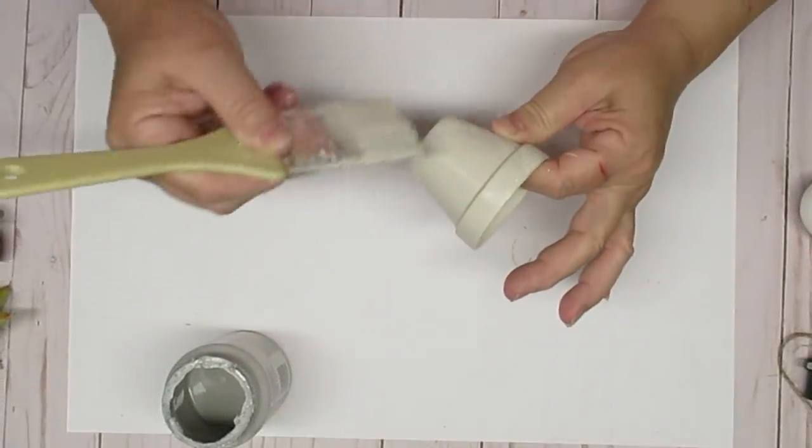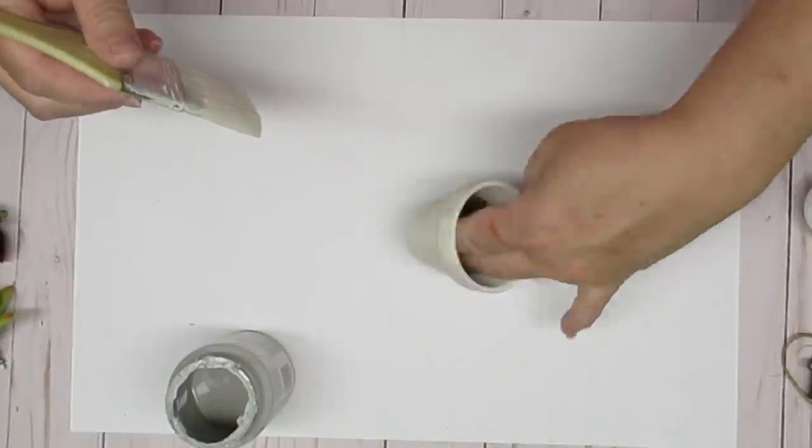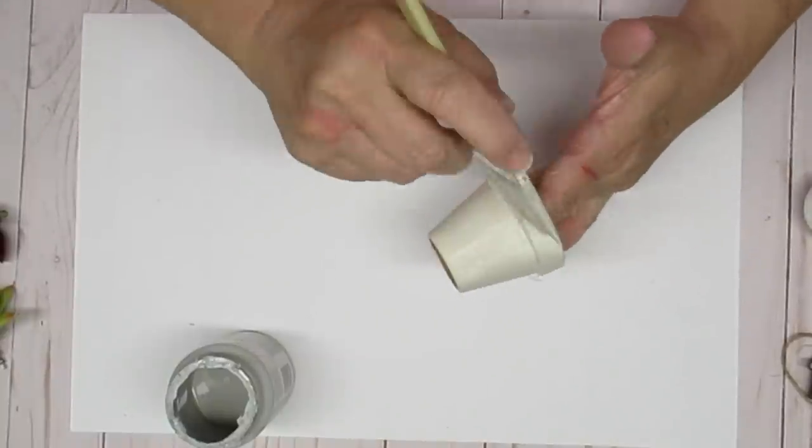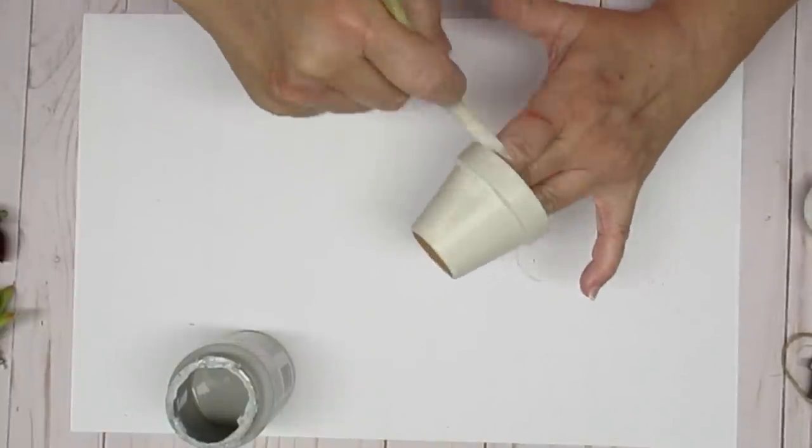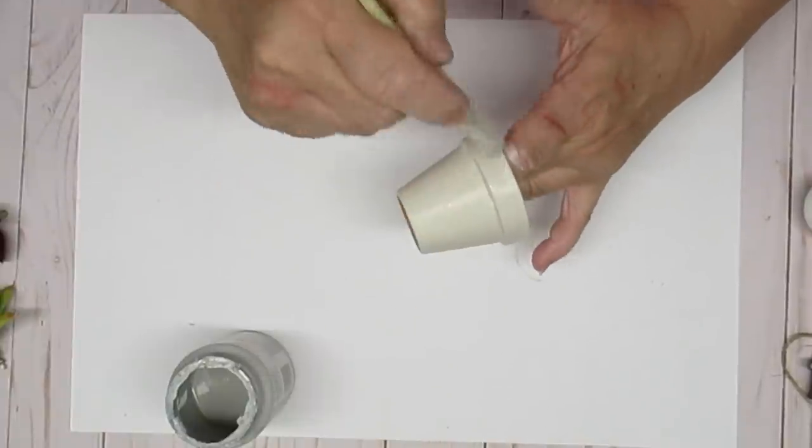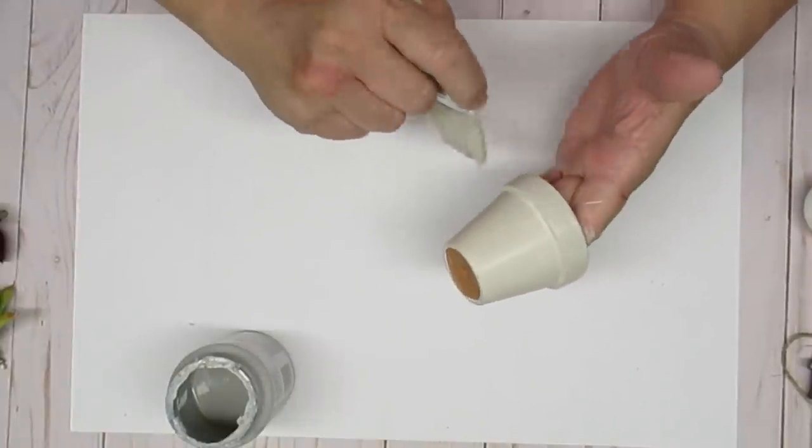My second project for you today is using one of these little terracotta pots that you can get in a pack of three from the Dollar Tree. It was already painted previously from another project but I'm going over it with a different color.